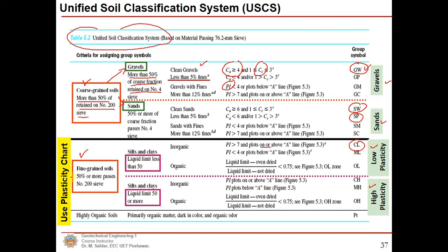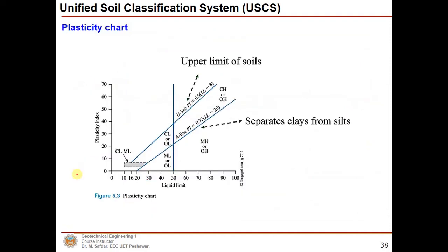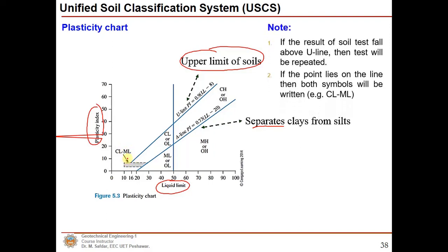For fine-grained soils we can also use the plasticity chart. On the x-axis you plot the liquid limit, and on the y-axis you plot the plasticity index. There is an upper limit line beyond which no soil can exist, and this line also separates clays from silts. There is a region where low-plasticity clay (CL) and low-plasticity silt (ML) overlap. If a test result falls above the U-line, the test is repeated; if the point lies on the A-line, both symbols are written.